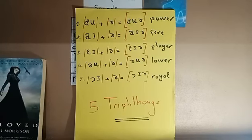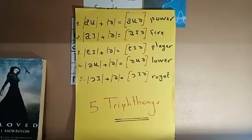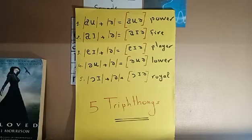But first of all, what's a triphthong? A triphthong is the most complex English sound. A triphthong is a glide or a movement from one vowel to another and then to a third, all produced and uttered quickly, rapidly, and without any interruption. That's the definition of a triphthong.